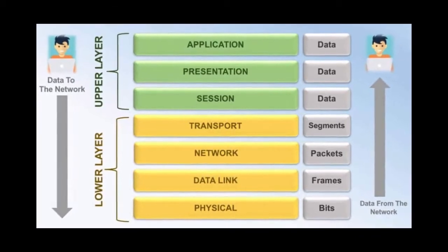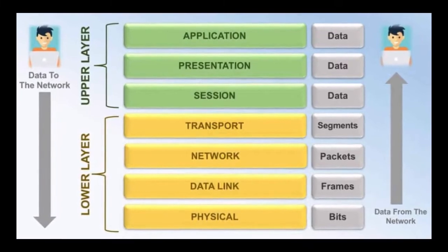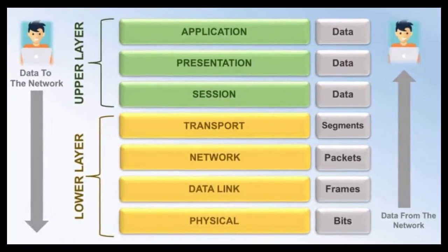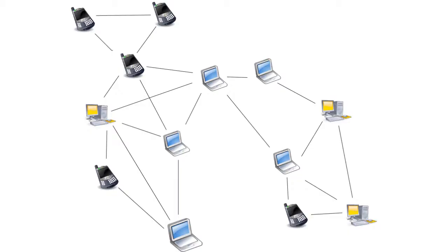Overlays are used for indexing and peer discovery, making the peer-to-peer system independent from the physical network topology. Based on how nodes are linked within the overlay network and how resources are indexed and located, we can classify networks as unstructured, structured, or a hybrid between the two. Unstructured peer-to-peer networks do not impose a particular structure on the overlay network by design, but rather are formed by nodes that randomly form connections to each other. Gnutella, Gossip, and Kazaa are examples of unstructured peer-to-peer protocols.